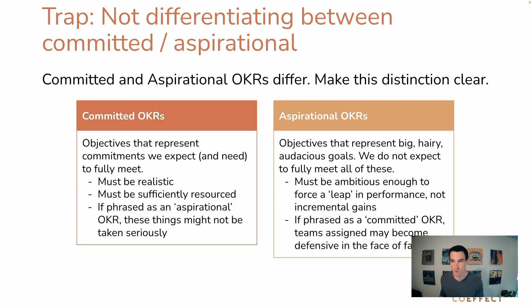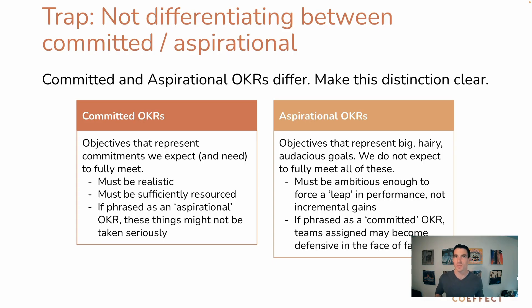Aspirational OKRs are those big, hairy, audacious stretch goals. They should be ambitious enough to force some kind of leap in performance, not just a smaller incremental gain. If you phrase an aspirational OKR as committed, a team may become defensive because it's going to be really hard to achieve, and more likely than not you're not going to achieve it — so you'd be setting teams up for failure. Be clear about what the differences are when setting an objective and key result.